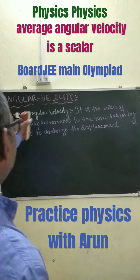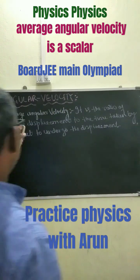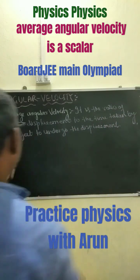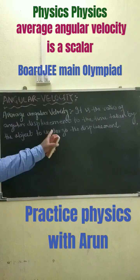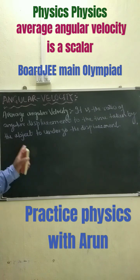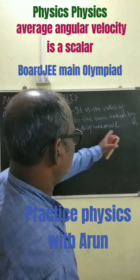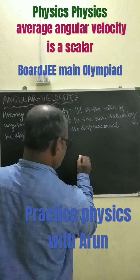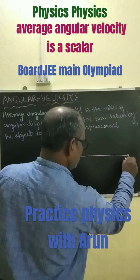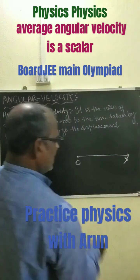Today we will have a class on angular velocity. Average angular velocity is the ratio of the angular displacement to the time taken by the object to undergo the displacement. Let us take a line of reference — this O with the horizon.